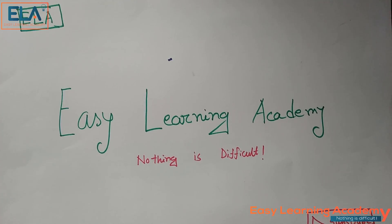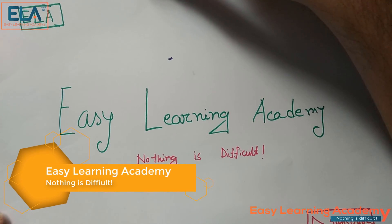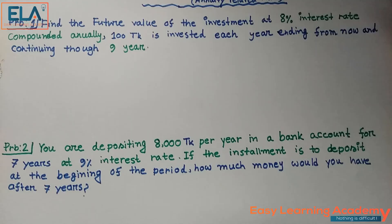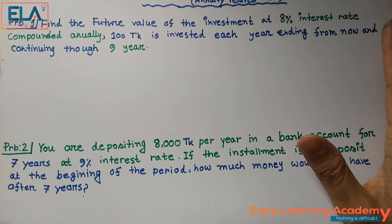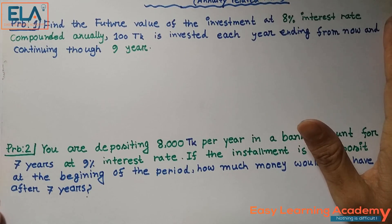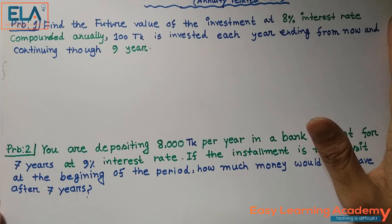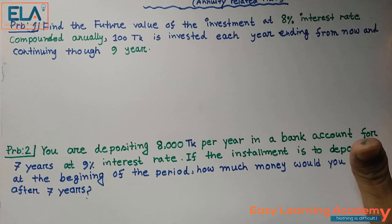Asalaamu Alaikum, welcome to our Easy Learning Academy. Today we are again doing time value of money. Today we are going to do a math solution. It's an annuity-related math — covering ordinary annuity and annuity due. We are going to solve the problem, so let's go to the discussion.